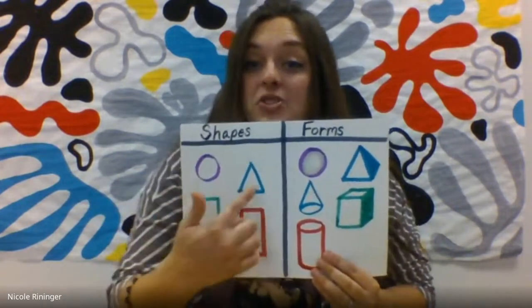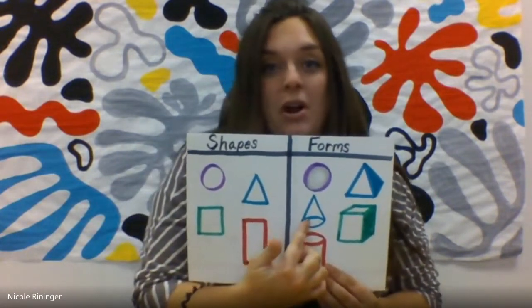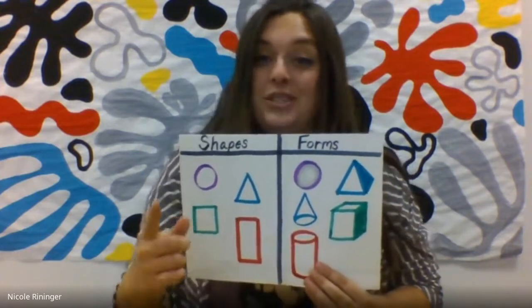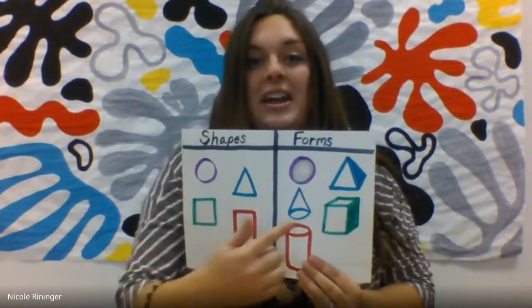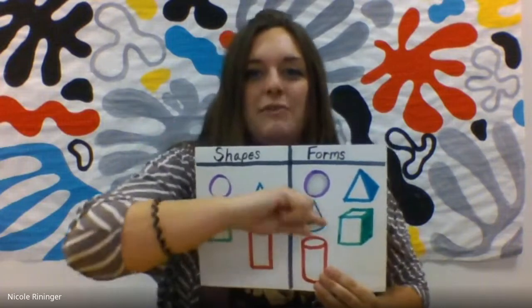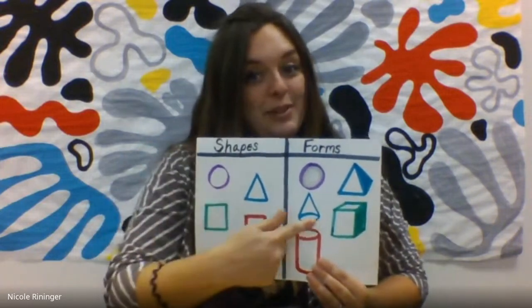Also with a triangle I can make another form called a cone. Can you say cone? Very good. Just like a cone you would eat ice cream in — so if I flip this around it will look like an ice cream cone.